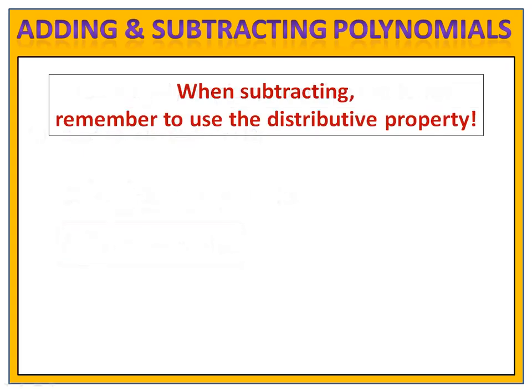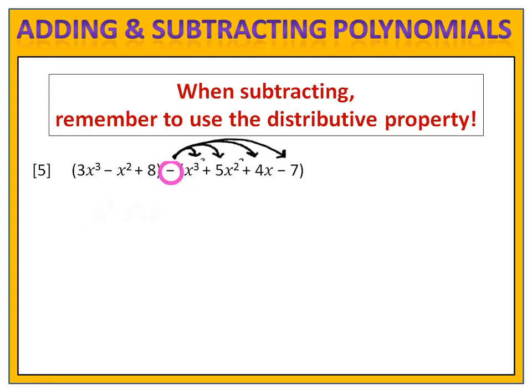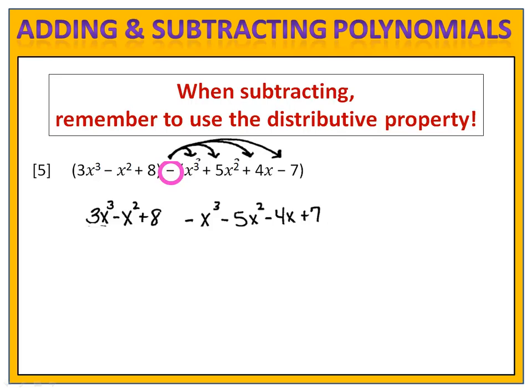In exercise 5, we're going to begin looking at subtraction. When you subtract, you have to be very careful. You have to remember to use the distributive property with whatever it is that you're subtracting — this is a very common error, so please proceed cautiously. We have 3x to the third minus x squared plus 8, and the second polynomial x to the third plus 5x squared plus 4x minus 7. We have this subtraction symbol and we have to distribute that subtraction into the polynomial. When we do that, we end up with 3x to the third minus x squared plus 8, and distributing gives us negative x to the third minus 5x squared minus 4x plus 7.